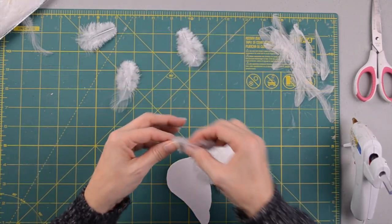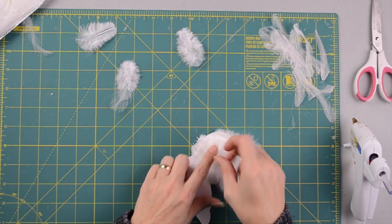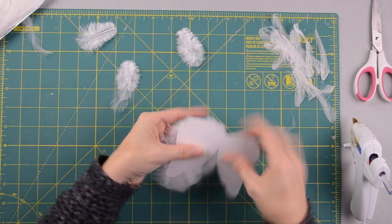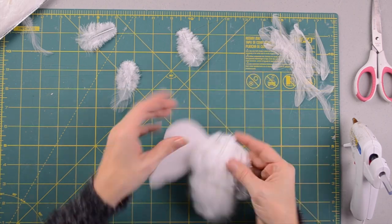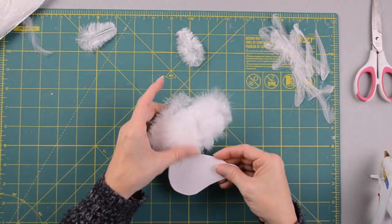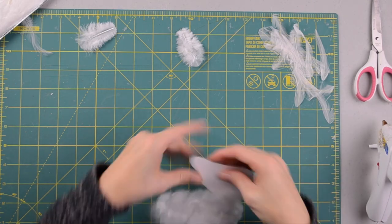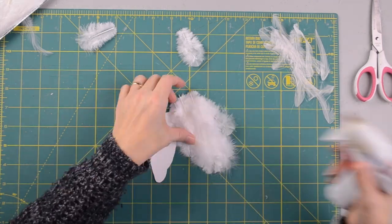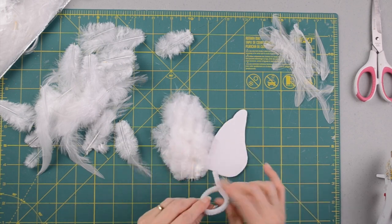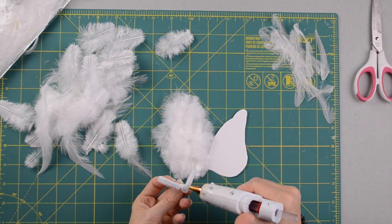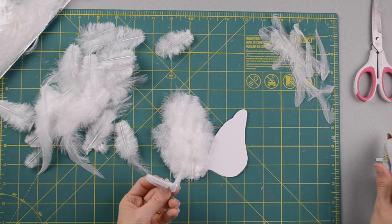Now when I get up to the top here, I am going to make it to where my feathers kind of overlap a little bit. So actually right now what I'm going to do before I start working on the other side, is I'm going to hot glue my pipe cleaner to my angel wings.